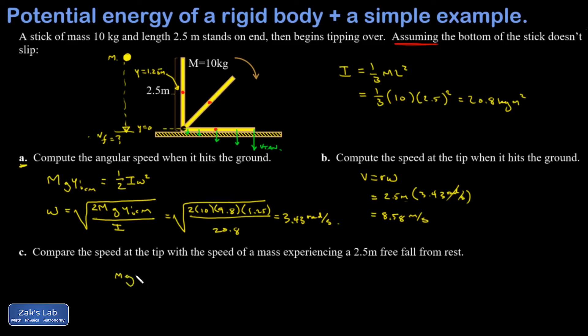And I'll just take an energy approach to this. So I have like an Mgy for the initial state equals one half MV squared for the final state. It doesn't matter what the mass is. Solve for V and you get square root of 2GY. So that's the square root of 2 times 9.8 times 2.5. And when I crunch the numbers, I get 7 meters per second.